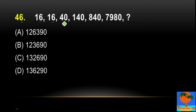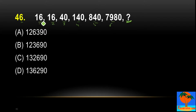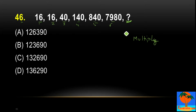Question number 46: the series is 16, 16, 40, 140, 840 and 7980 — find the missing next term. We can see there are 6 terms given: the first term is 16 and the sixth term is 7980. Since the terms increase very steeply, we can say that multiplication is definitely happening here.